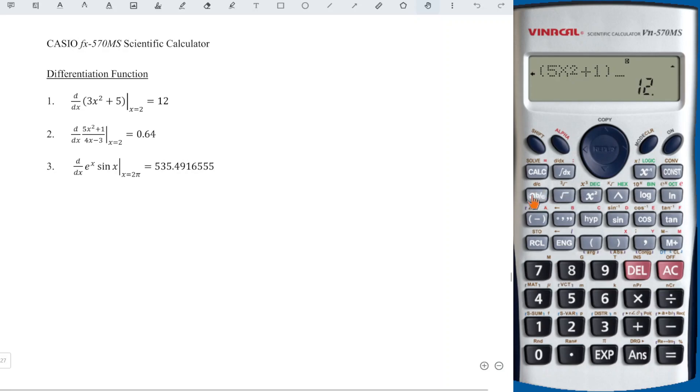For the fraction, we can use the fraction button or divide. Bracket 4, alphabet x minus 3. At the point 2, so comma 2. Press equal to obtain the correct value as we can see here. Last example.